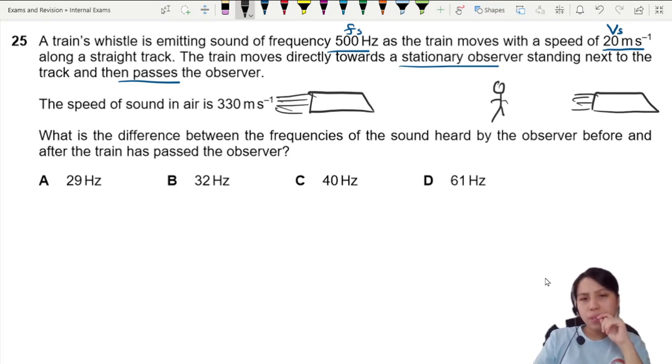What's the difference in the frequency heard by the observer—that's what we call observer frequency—before and after the train has passed the observer? For Doppler effect, there is one equation written in the data formula sheet at the first page of every exam question.